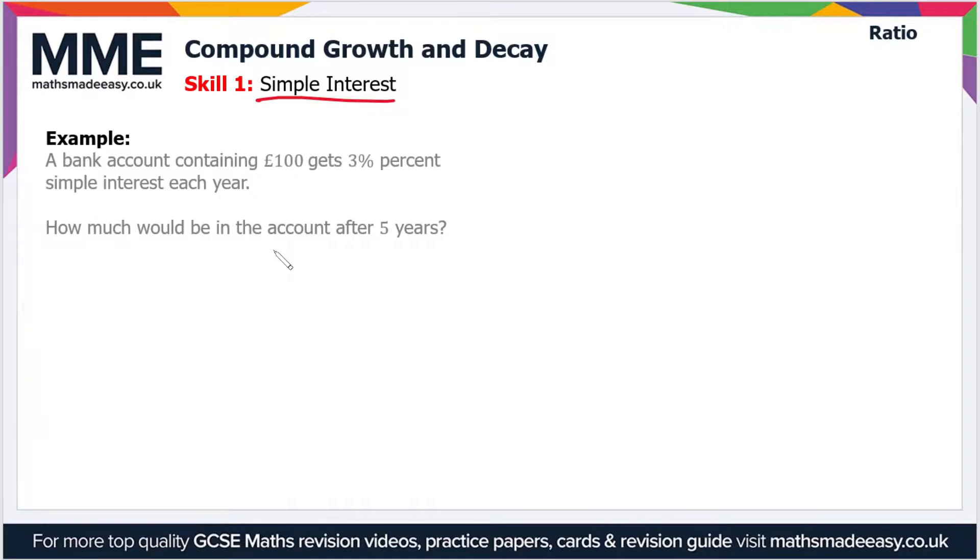In this particular example, a bank account containing £100 gets 3% simple interest each year. How much would be in the account after 5 years?